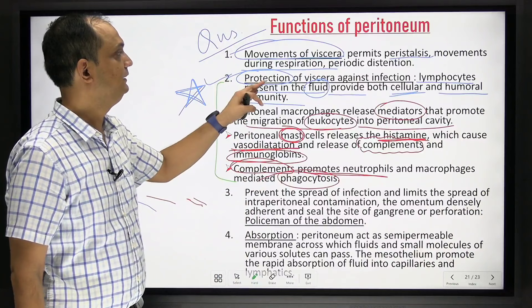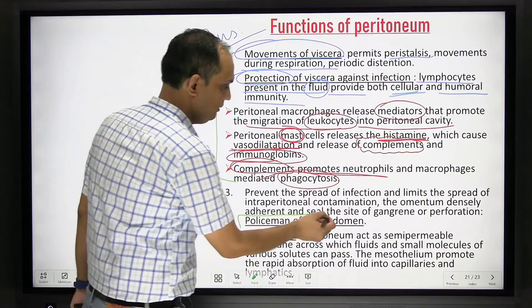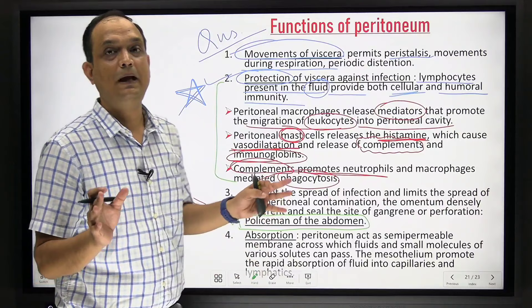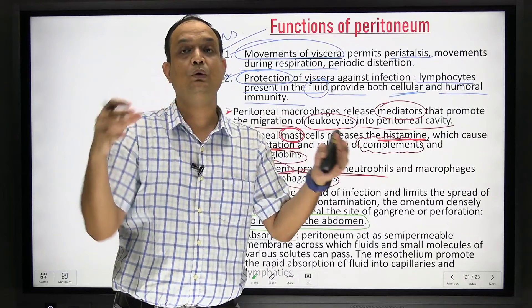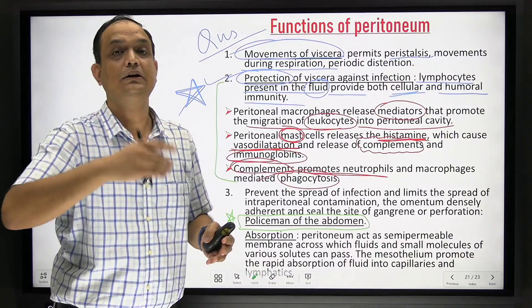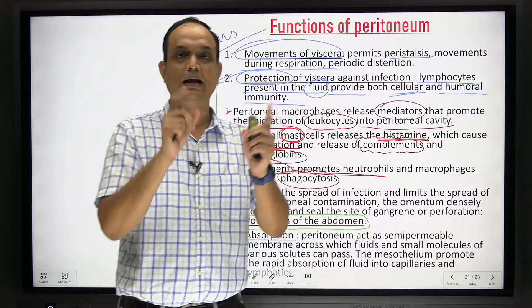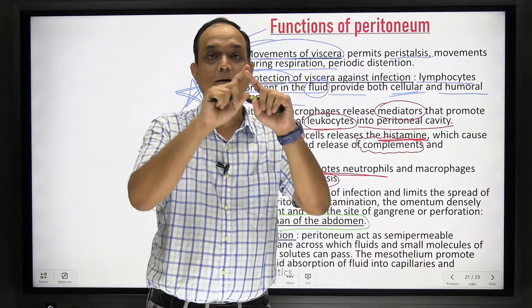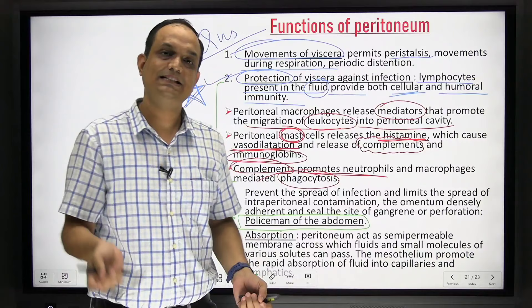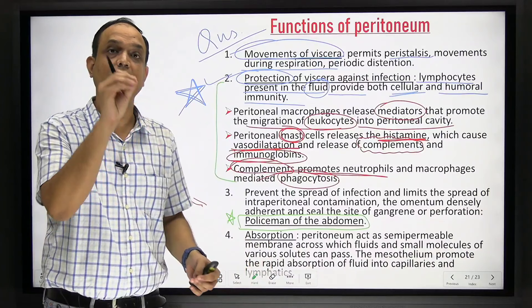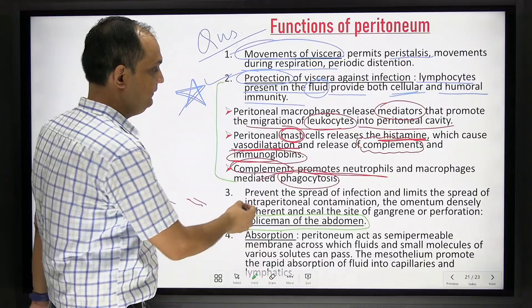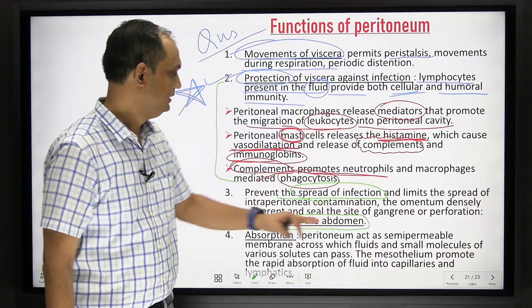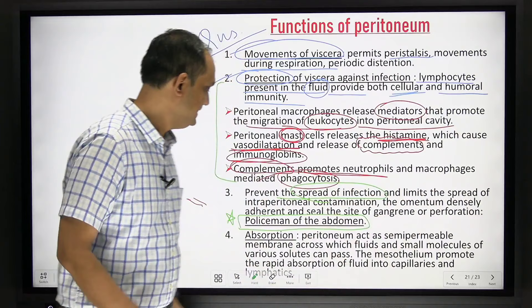Third function: 'policeman of the abdomen.' If any intraperitoneal organ gets punctured or gangrenous and fluid starts leaking, the peritoneum — especially the omentum — automatically goes and seals that area, acting as a patch. This prevents spread of intraperitoneal contamination. The omentum is densely adherent and seals the site of gangrene or perforation.